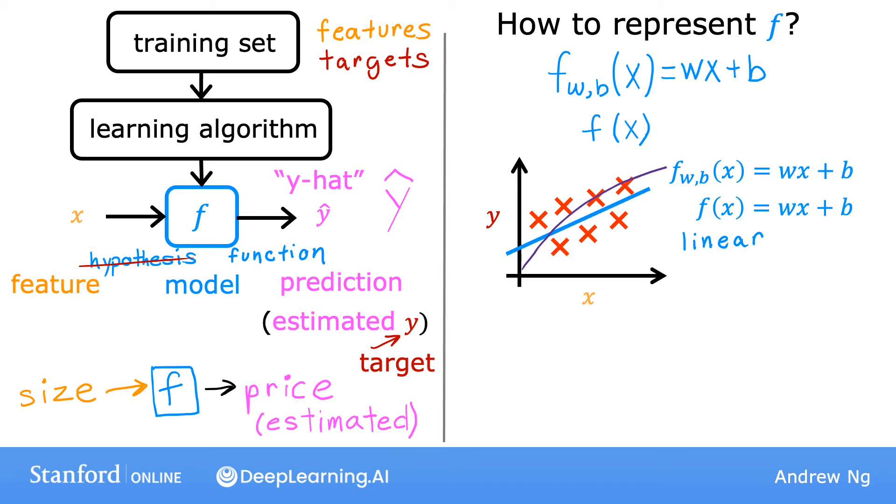This particular model has a name. It's called linear regression. More specifically, this is linear regression with one variable, where the phrase one variable means that there's a single input variable or feature x, namely the size of the house.